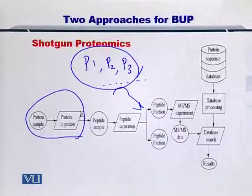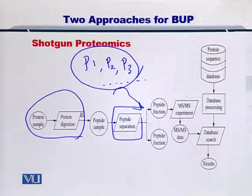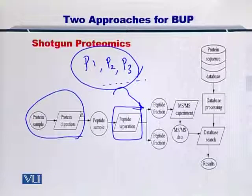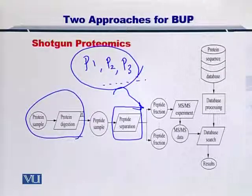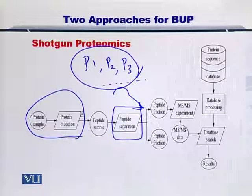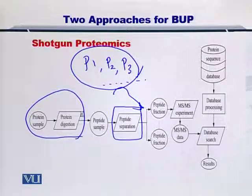Once the proteins are digested into peptides, you can separate these peptides using any method, for instance a gel or chromatography. So the key difference is that in shotgun proteomics, you take the entire protein mixture, digest it, and obtain the resultant peptides for onward separation and mass measurement using the mass spectrometer.